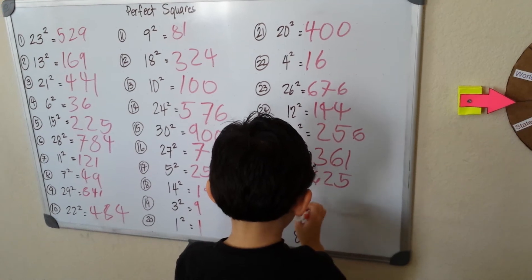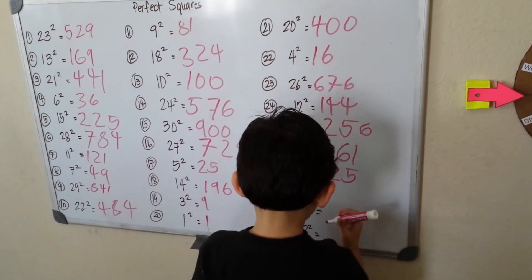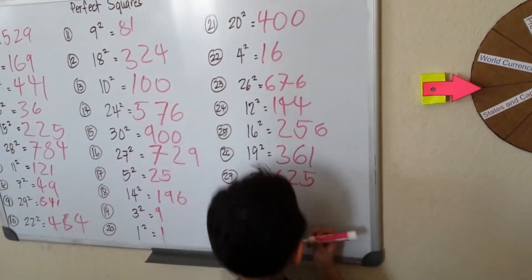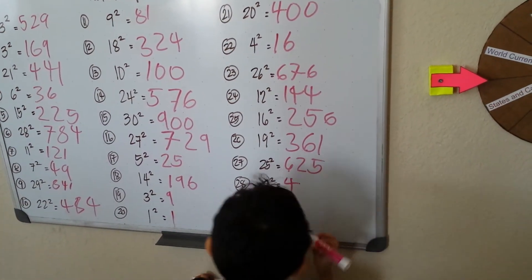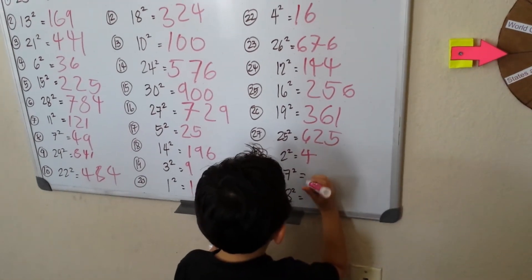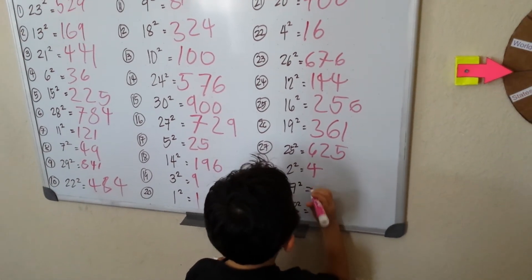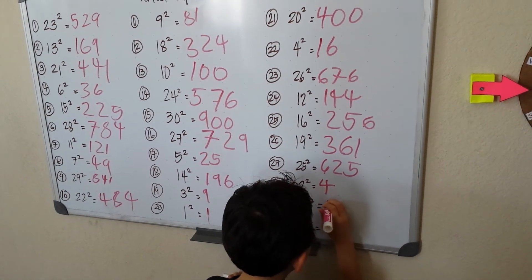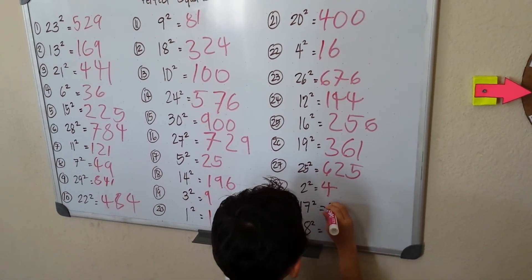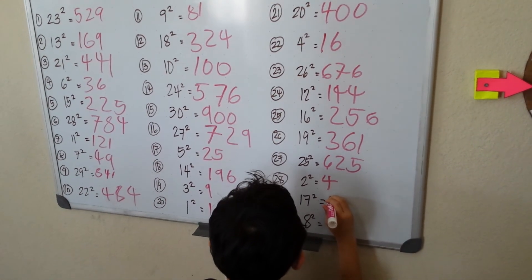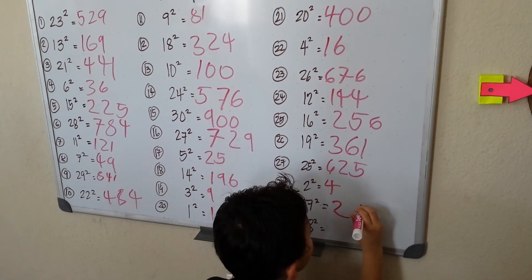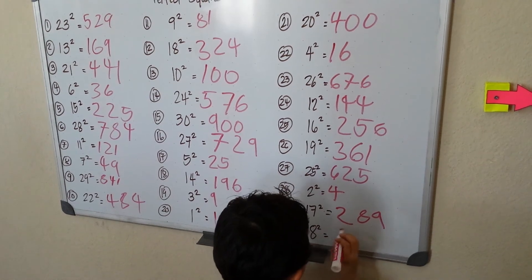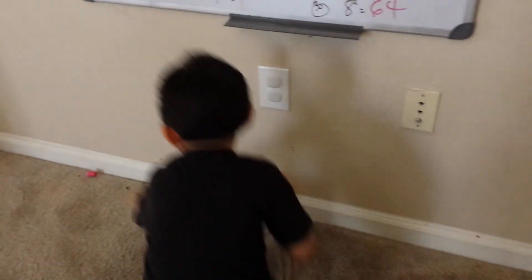This is getting bigger. 2 squared is equal to 4. 17 squared — let me think — so that will be 289. 8 squared is 64.